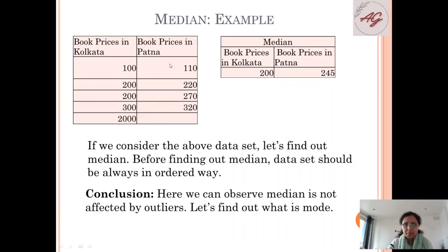We are considering the same data set. When I am calculating median, I am getting 200 and 245. If we consider the above data set, let's find out the median. Before finding out median, data should be in an ordered way, like it should be 100, 200 like this.